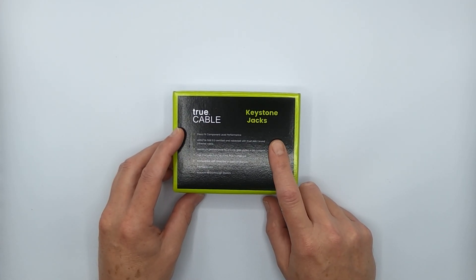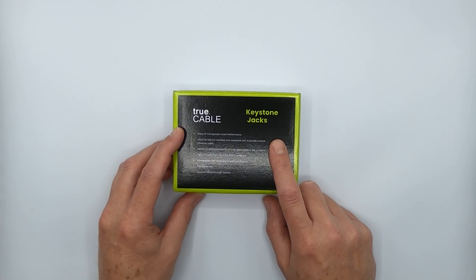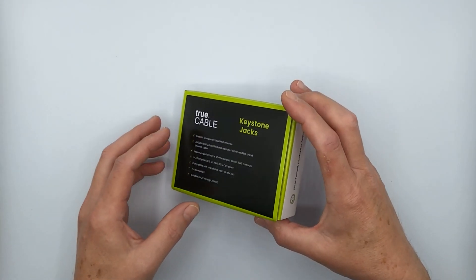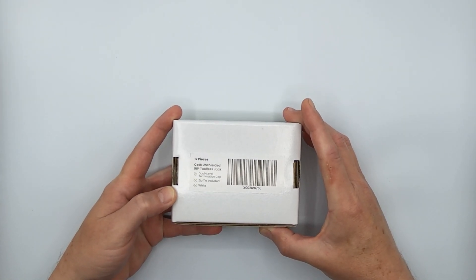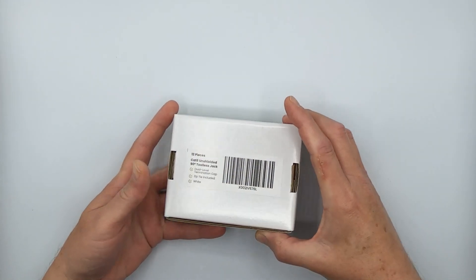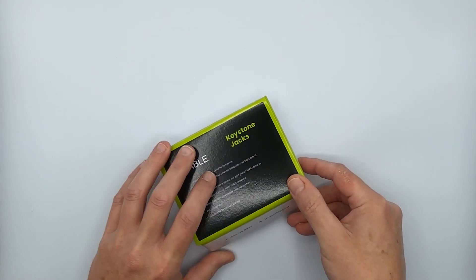Actually, this is one of multiple types that we're going to be carrying. In this particular case, it is unshielded Category 6 toolless keystone jacks. Let's take a look and see what's inside the box.